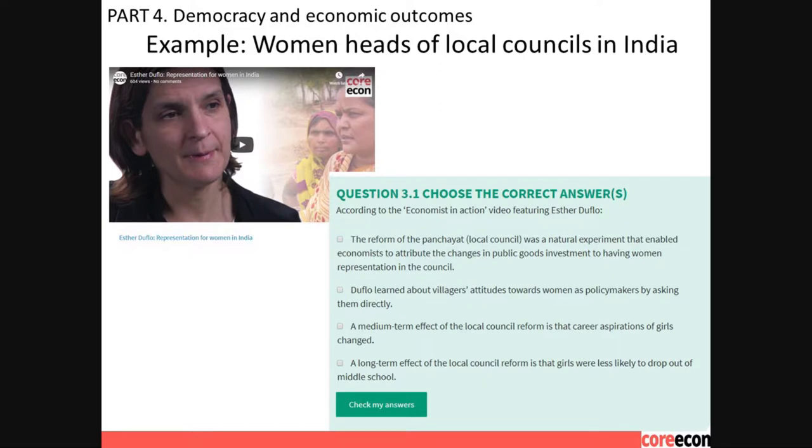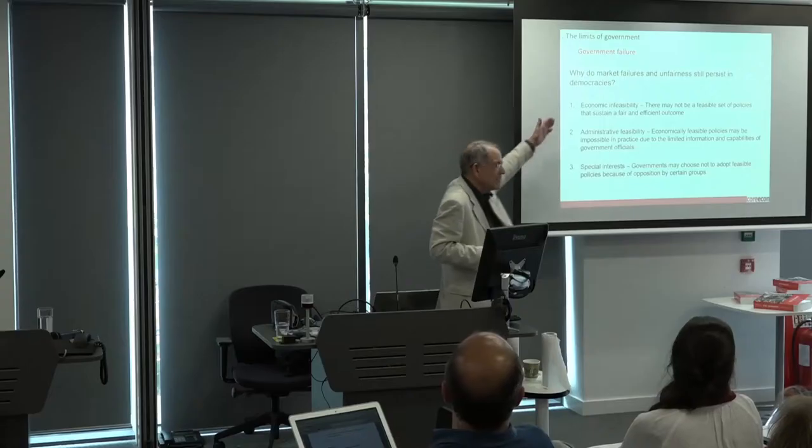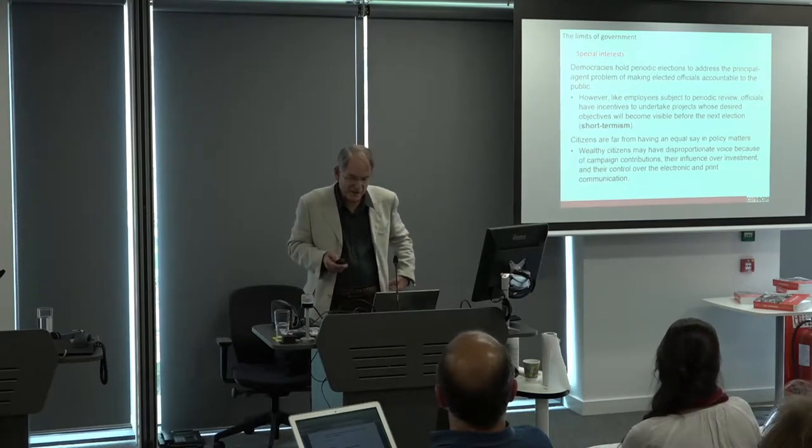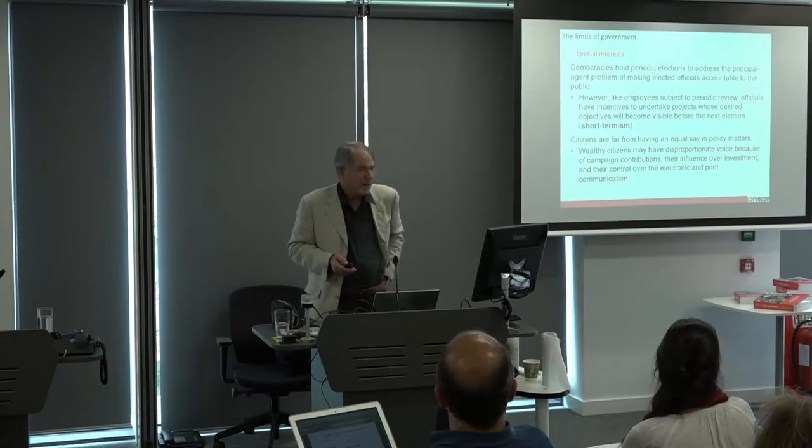We talk about government failure in terms of the limits on what governments can do and do do. We have to admit we're not really happy with the term government failure. It's popular in the literature and a nice companion to market failure, but it can't really be defined in the same way, because we call government failures many things in addition to simply not implementing a Pareto efficient outcome. But we use the term nonetheless. We talk about special interests but also structural constraints.